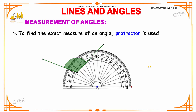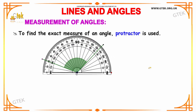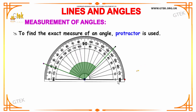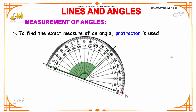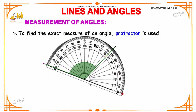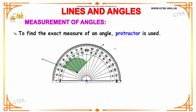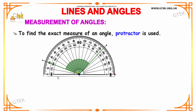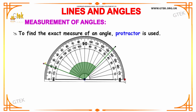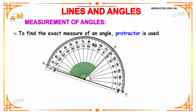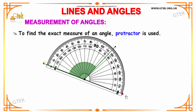Next we are going to see how to measure the angle. The angle is measured using a protractor. Here you can see how the angle is measured between two lines. The angle shown here is 115 degrees. This is how a protractor can be used to measure the angle between two lines.